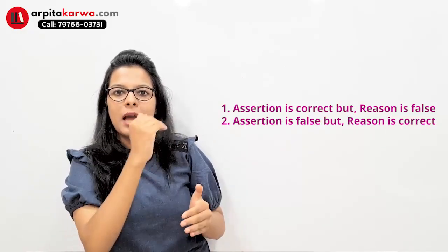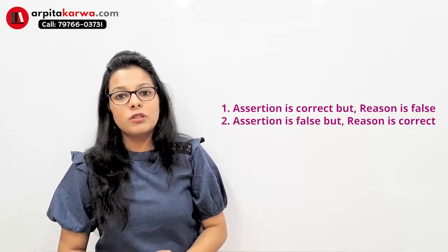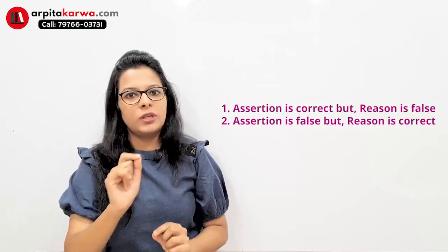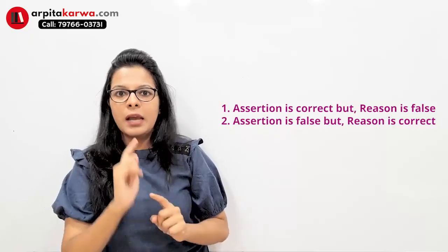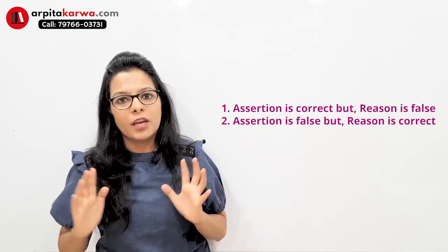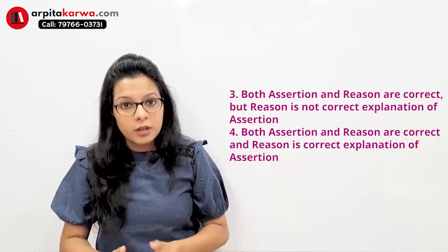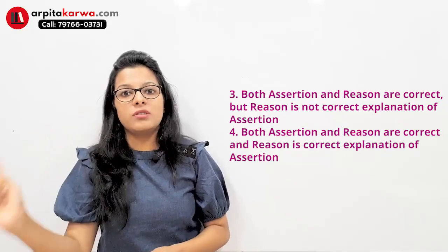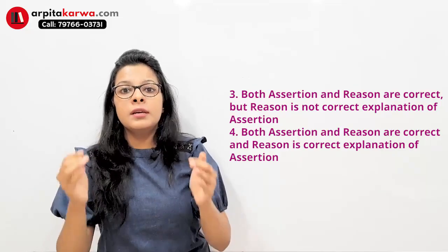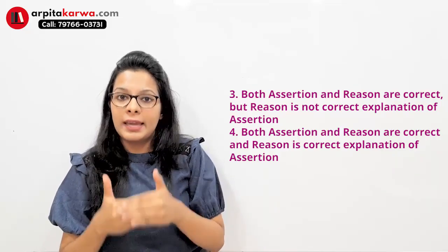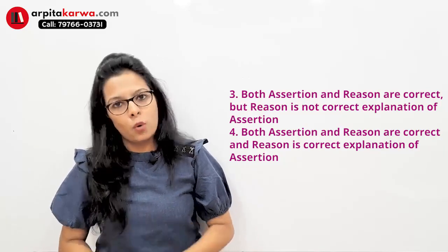To summarize, solve assertion-reason questions in two steps. In step one, read the assertion and reason statements separately and mark each as true (T) or false (F). If one is wrong, the answer will be option A or B. If both are correct, go to step two: check whether the reason is actually linked to and explains the assertion. Based on that, you choose between the third option (both true, reason not a correct explanation) or the fourth option (both true, reason is a correct explanation).